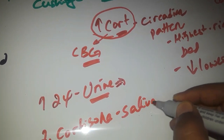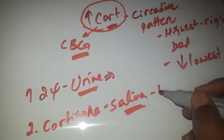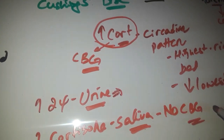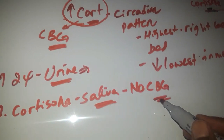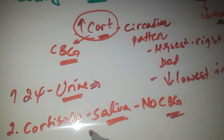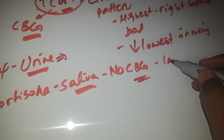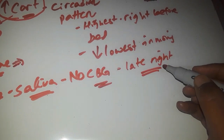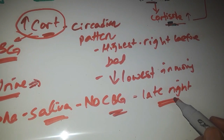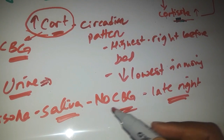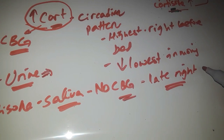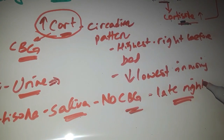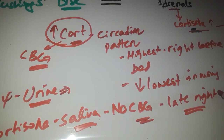The second method is measuring cortisol in saliva. We measure salivary cortisol because there is no cortisol-binding globulin in saliva, eliminating that confounding factor. This is done at late night, because at that time cortisol is supposed to be at its lowest. In a normal patient, salivary cortisol should be lowest at midnight. But if a person has Cushing's syndrome, they will have increased cortisol in their saliva at midnight.